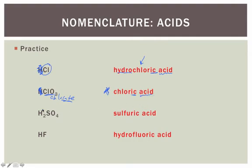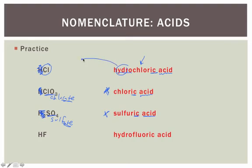Let's take it a step further. Again, we are not interested in the H — we're only interested in the negative ion. In this case it's SO4, the polyatomic ion known as sulfate. It has an -ate ending, which changes to -ic. Then we tag the word 'acid' onto the end. Notice again, no prefix — this is polyatomic. We only use prefixes when our ion is monoatomic.